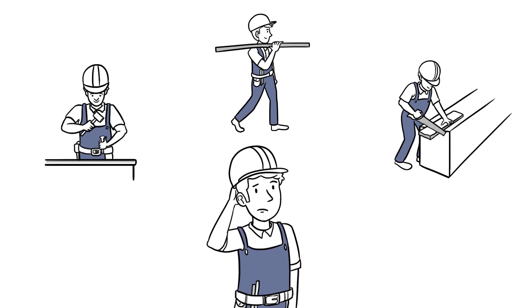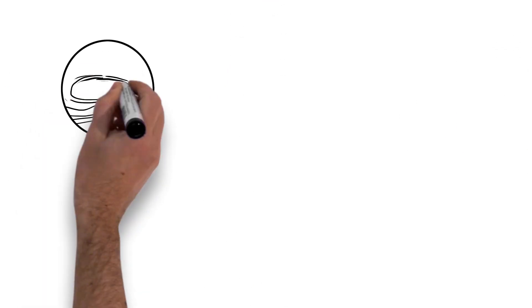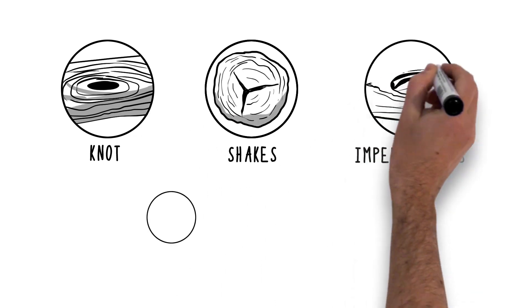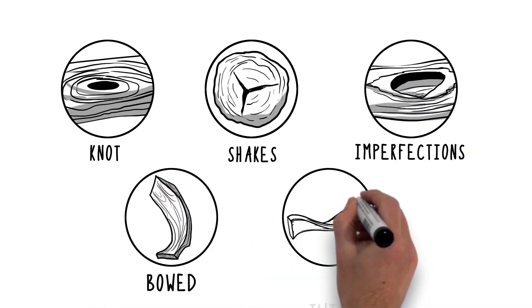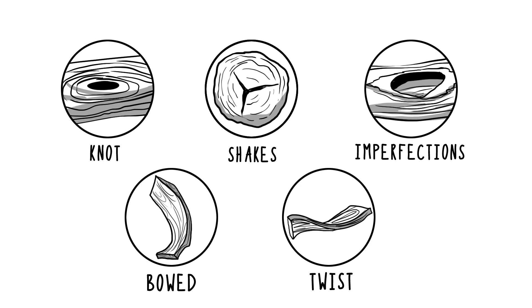We all know what wood is, but it has its challenges. Timber can contain knots or shakes or imperfections that mean you can't use certain parts of it. It can bow or twist and move.